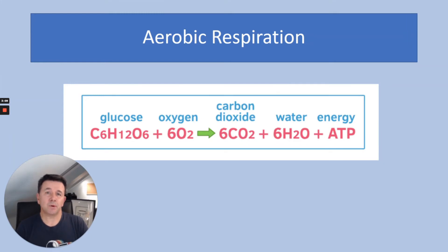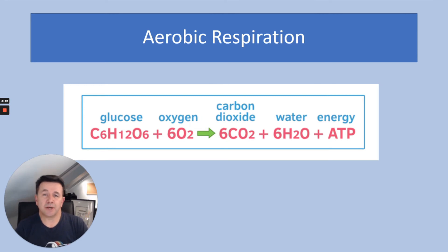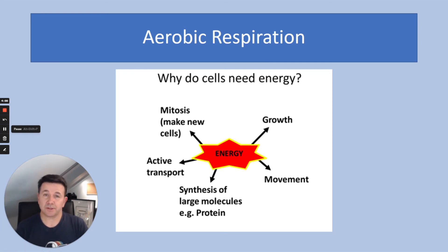Aerobic respiration is when the body converts glucose and oxygen into carbon dioxide, water, and energy — so it releases energy. If you're doing higher tier, you will need to know the chemical symbols; if you're doing foundation tier, the word equation is fine. Glucose comes from food you digest, oxygen comes from breathing and is absorbed into the bloodstream. Carbon dioxide is released when you exhale, and the energy is released as chemical energy in the form of ATP. Cells need energy for many different processes such as growth, movement, synthesis of molecules like proteins, active transport, and making new cells through mitosis.